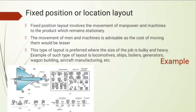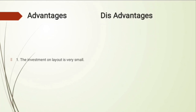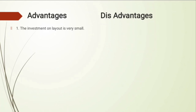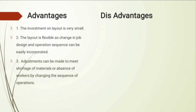You can see the example of aircraft manufacturing layout in which workers and machines move to the product itself, and also shipbuilding manufacturing where the product is fixed and supplies move to it. Advantages include: very small investment in layout design since you just move resources to the product; the layout is very flexible as changes in job design or operation sequence can be easily incorporated; and adjustments can be made to meet material shortages or absent workers by changing the sequence of operations.